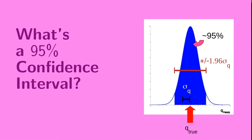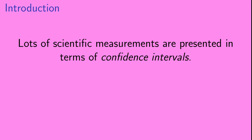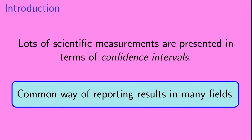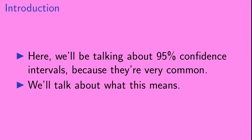Welcome to 'What's a 95% Confidence Interval?' Lots of scientific measurements are presented in terms of what are called confidence intervals. This is not just true in physics — in recent years it has become a common way of reporting results in many fields. In this video, we'll specifically be talking about 95% confidence intervals, because they are very common in reported scientific results.